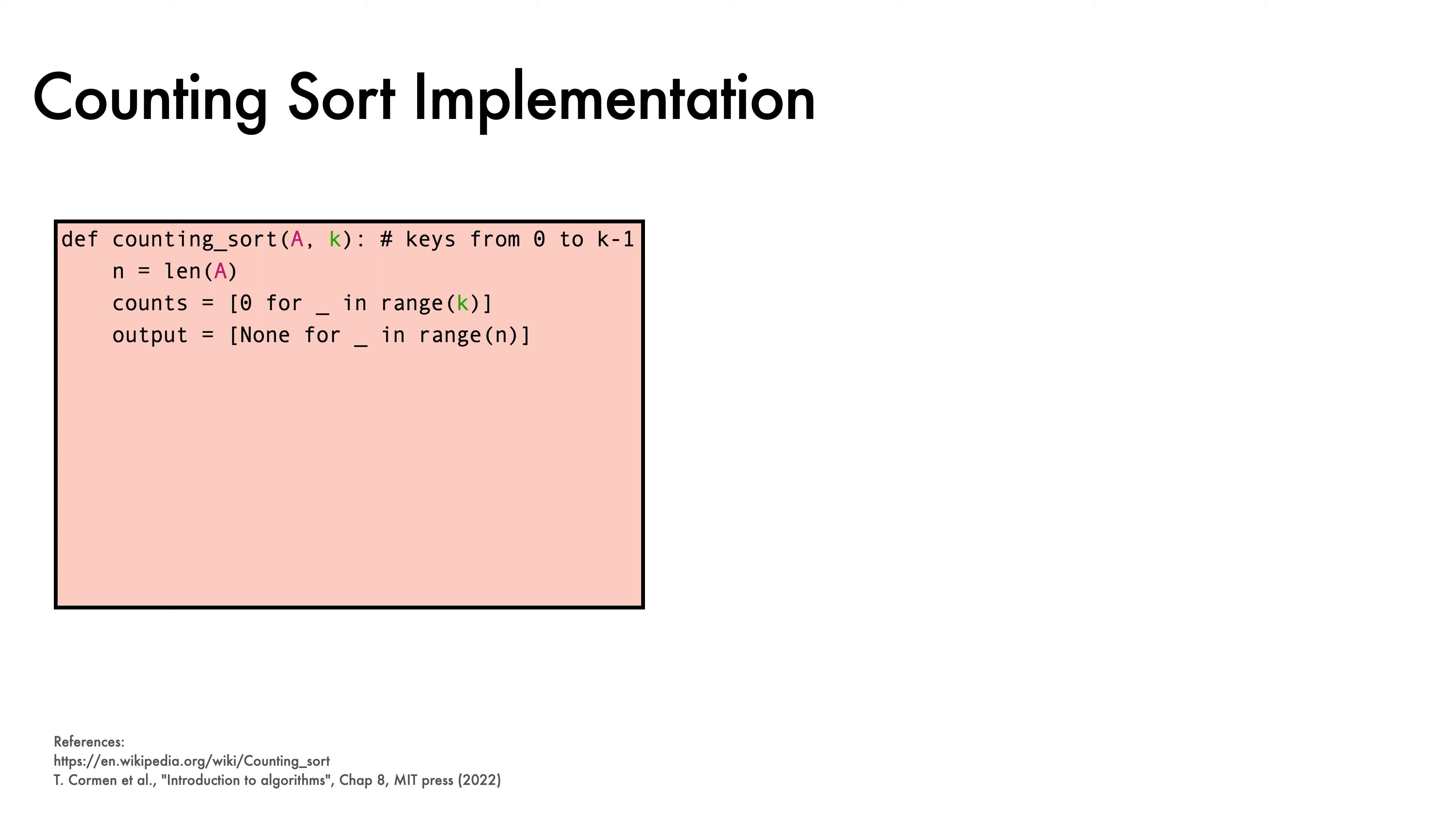Let's see how Counting Sort can be implemented in Python. Our Counting Sort function takes in a list, a, of integer keys as well as a parameter, k, that indicates the range of keys in the array. In particular, our function will work with arrays whose k possible keys are the integers from 0 up to and including k-1. We start by computing the length of a. Then we allocate a list of zeros to keep track of key counts and a further list that will store the sorted output.